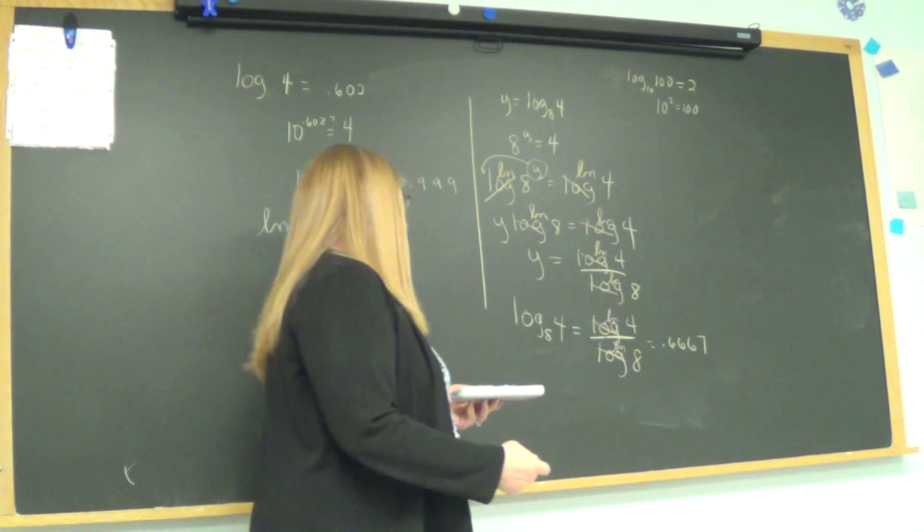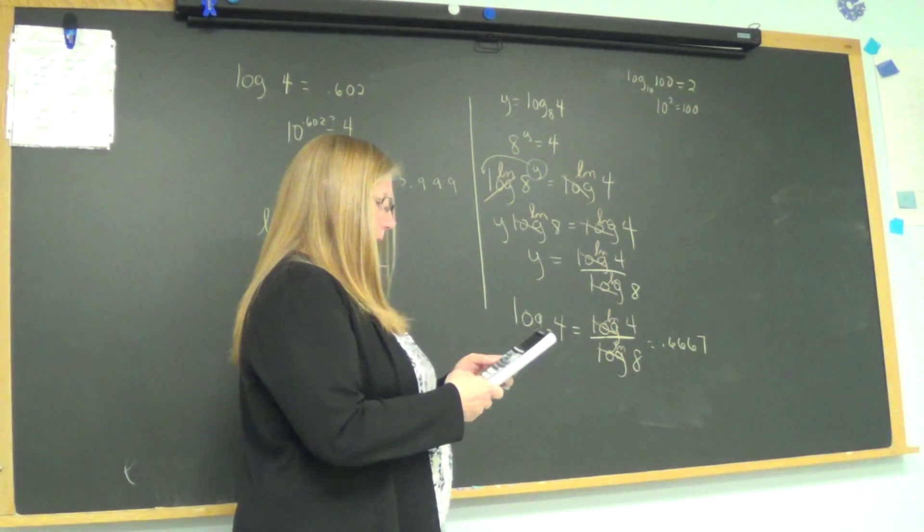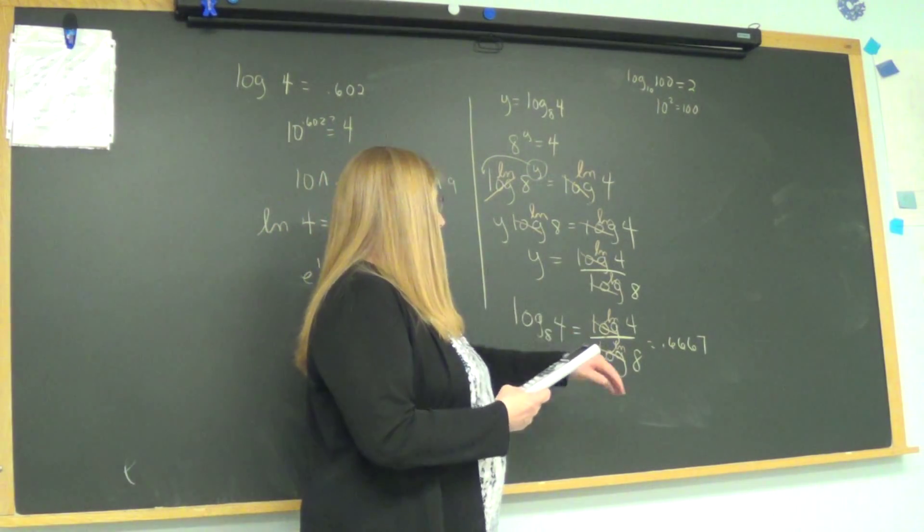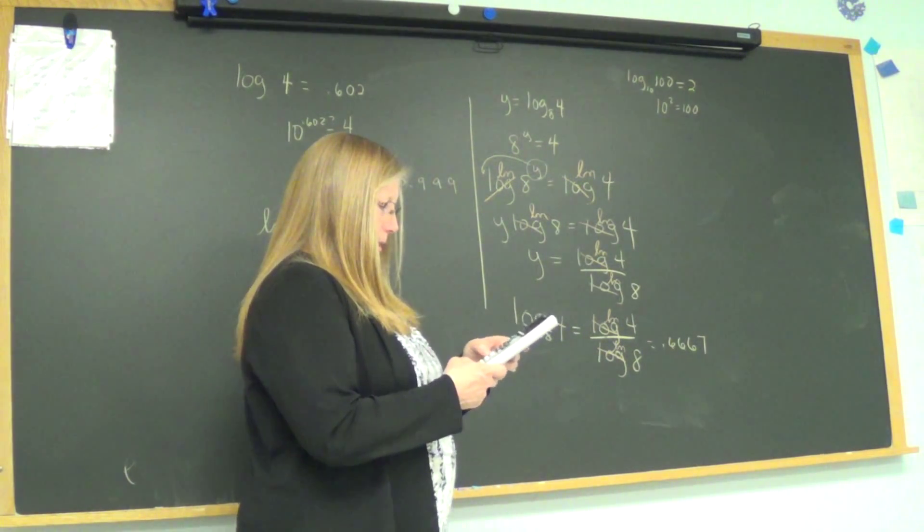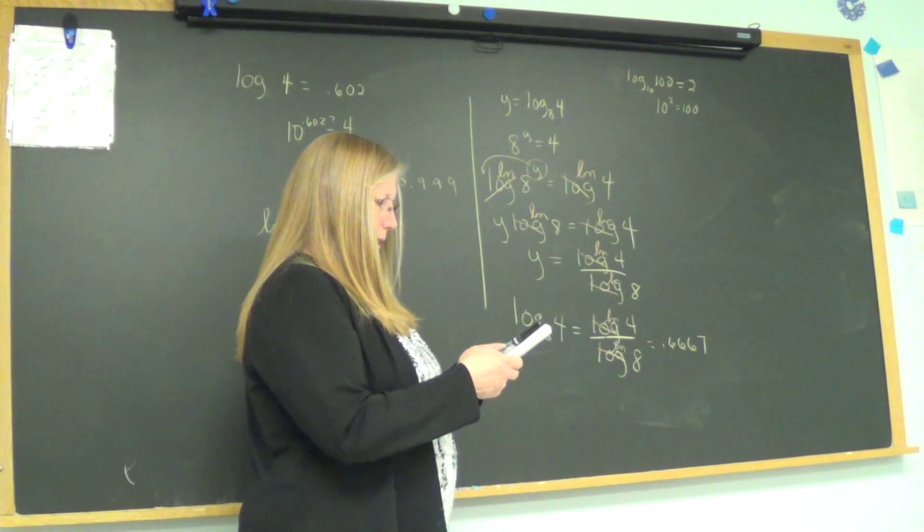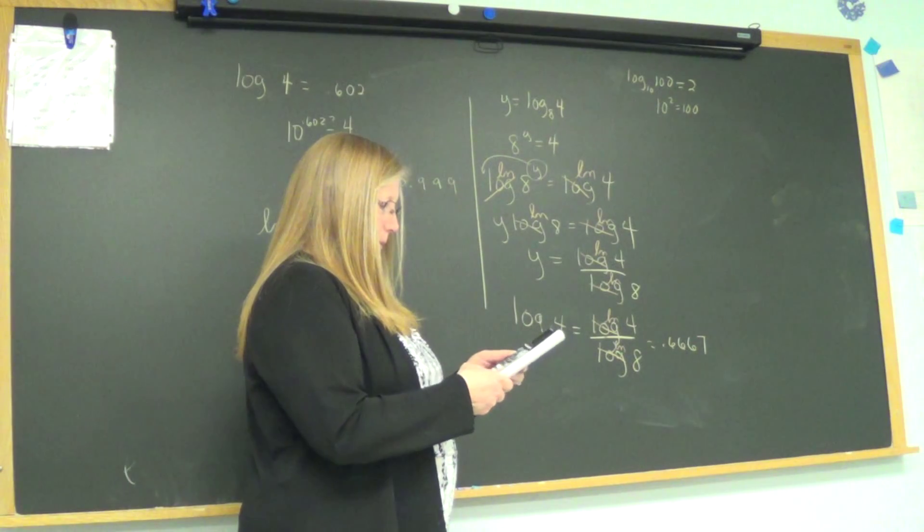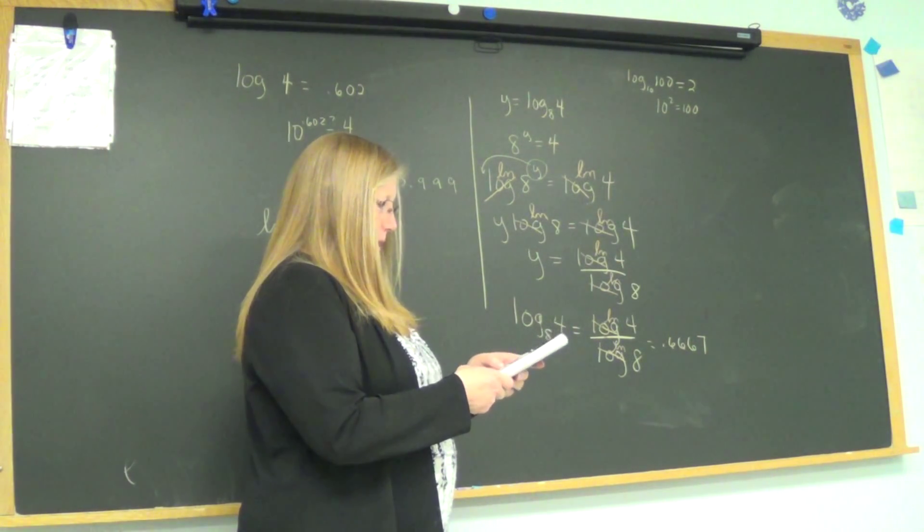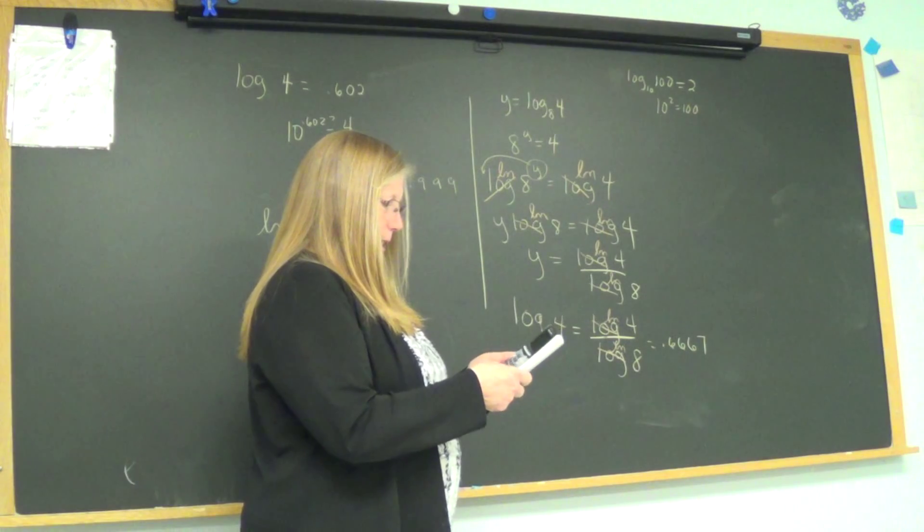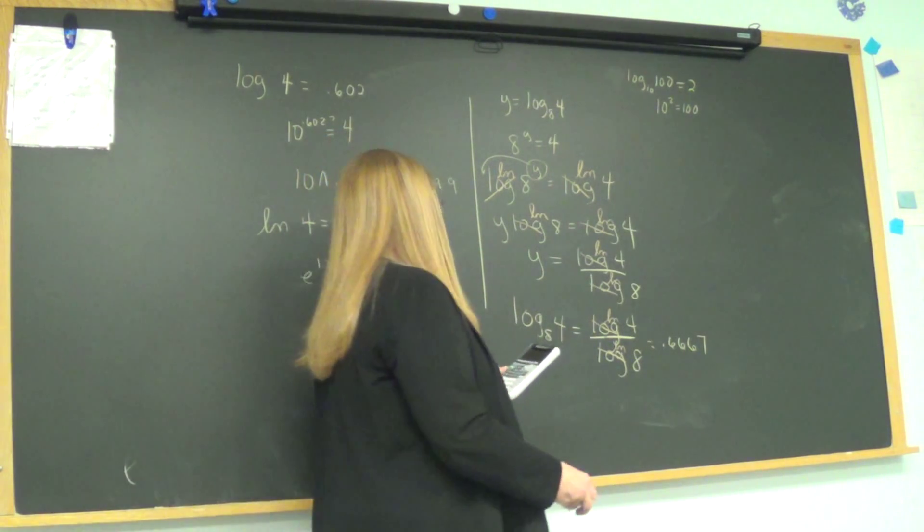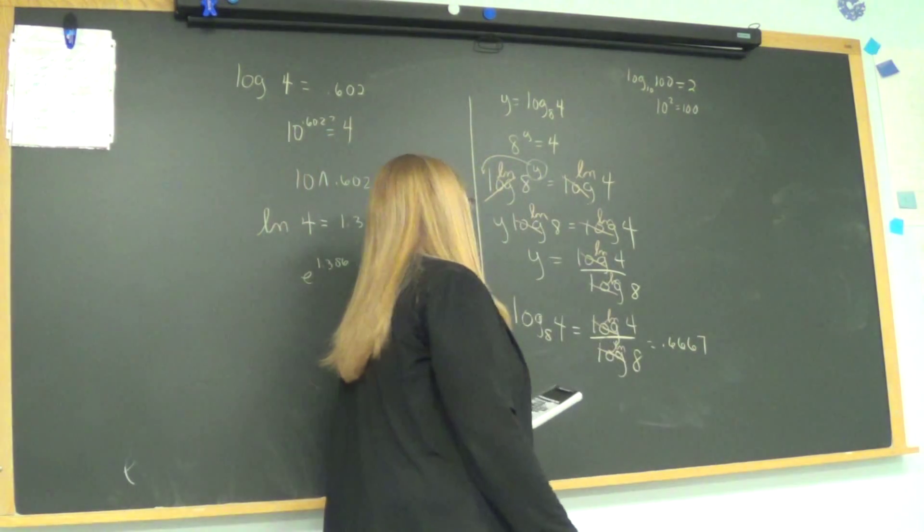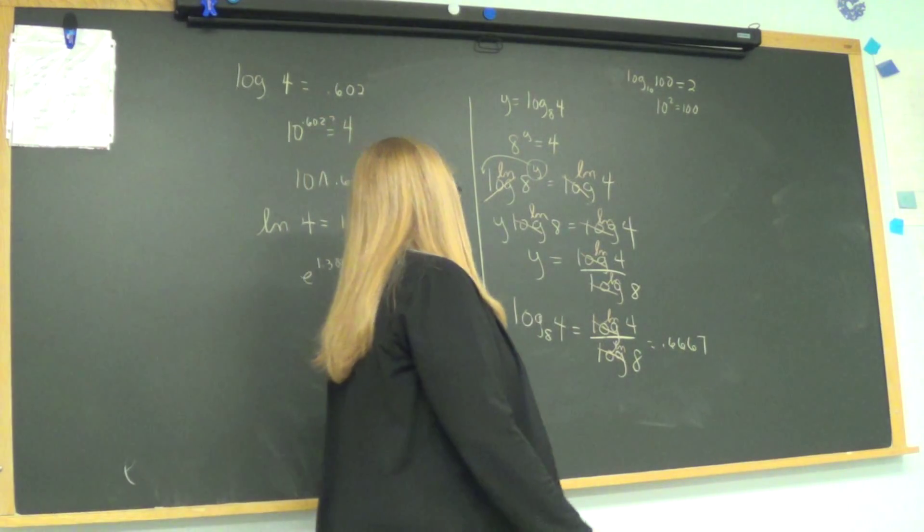And now I'm going to put in LN of 4 over LN of 8, closing parentheses around the numbers, divided by LN of 8. So try that for yourself, and confirm that I get the same number whether I used LN or log.